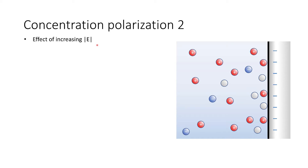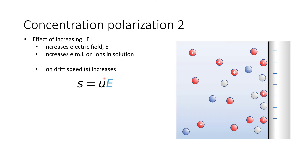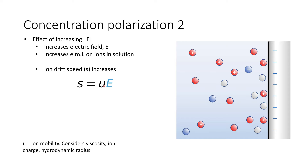If we increase the potential, we increase the electric field, which increases the electromotive force on ions in solution. Our ion drift speed is proportional to the electric field strength, where the U term is ion mobility, which accounts for solvent viscosity, ionic charge, hydrodynamic radius, and so on. By increasing the drift speed we increase the rate at which ions arrive at the electrode, allowing us to more rapidly deliver more current.